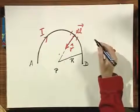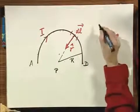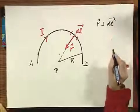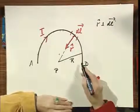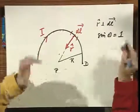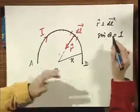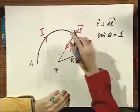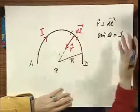Well what is interesting is that every element dL, for every element dL, r is perpendicular to dL. And therefore in all cases, the sine of that angle theta is the same: one.